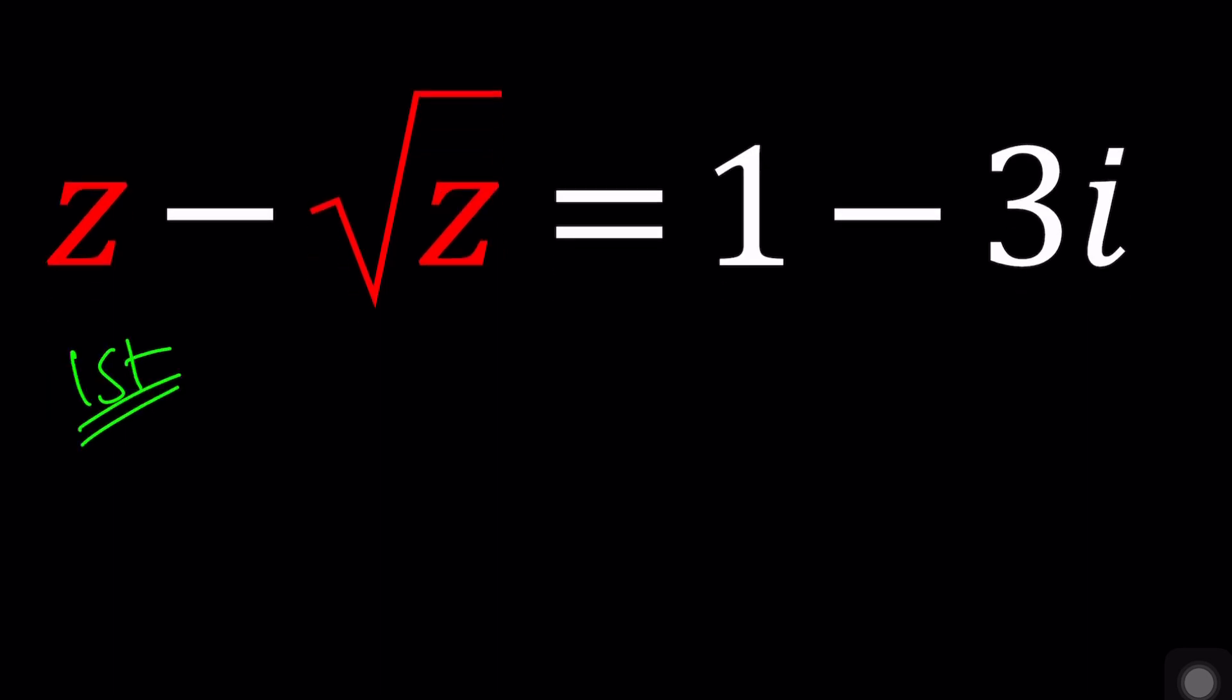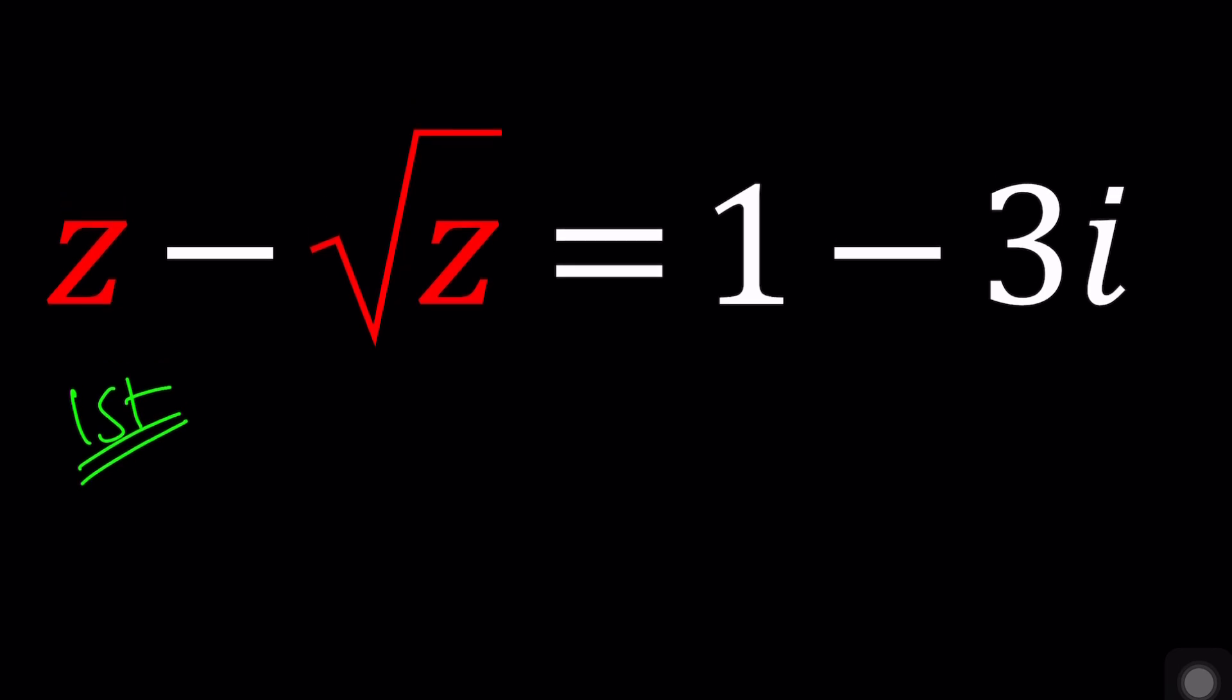So our first method uses substitution. Because we have a radical we can go ahead and call it something, how about w? Let's call square root of z, w, and from here we get z equals w squared. So when we solve for w we're going to get a quadratic equation and then once we find the values of w we can square them to find z.